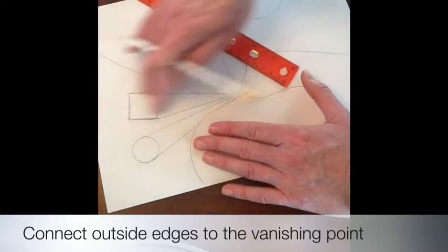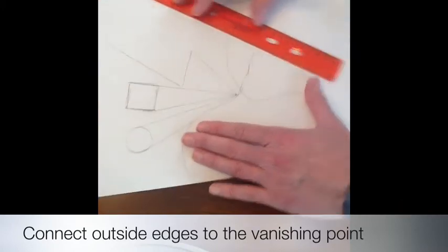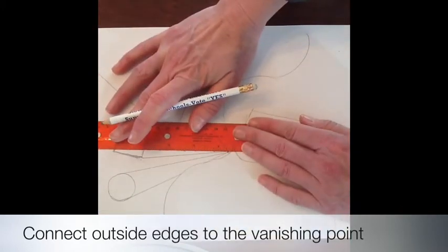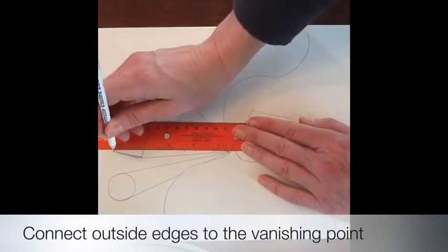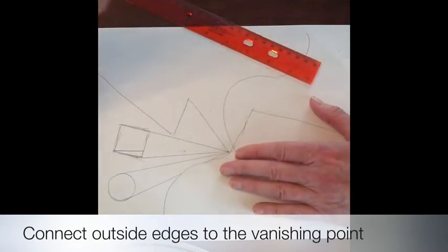And then now if I want to make it look like you can go into this box I'm going to connect this corner to the vanishing point as well. And then it should look like the box is an open box. I think you can actually go into it.